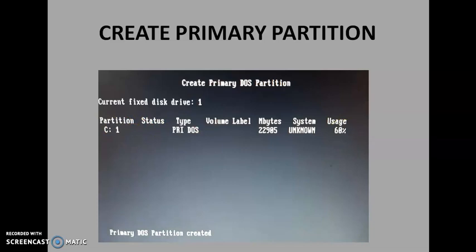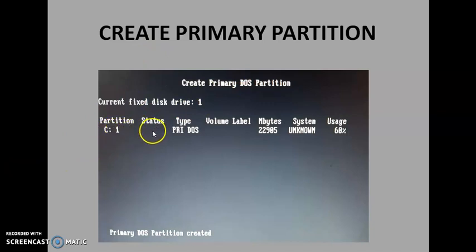We need to make the bootable partition active so that the operating system knows which partition to use for booting. To make it active, go back to the main option and choose option number two. It will ask which partition you want to make active — specify partition number one. It will make that partition active and you will see status 'A' indicating active partition. Only one drive can be made active. Generally it is the primary partition which holds the operating system files that is made active.